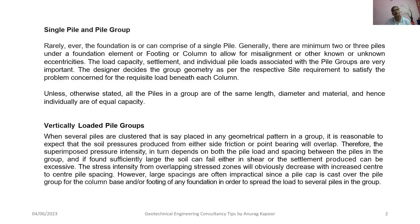For vertically loaded pile groups, when several piles are clustered in any geometrical pattern — triangular, rectangular, square, hexagonal, etc. — it is reasonable to expect that the soil pressures produced from either side friction or point bearing will overlap. The superimposed pressure intensity depends on both the pile load and spacing between the piles in the group. If the spacing is sufficiently small, the soil can fail either in shear or the settlement produced can be excessive, beyond the permissible safe limits.